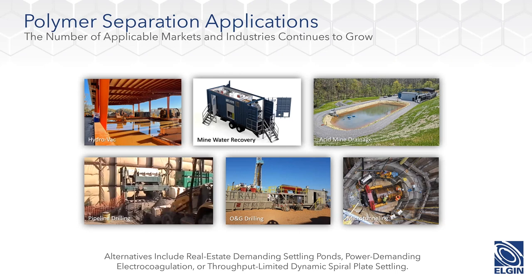There are a few alternatives to polymer chemistry — settling ponds, which take a lot of real estate and permitting; power-demanding electrocoagulation, which is effective but has significant power consumption; and throughput-limiting dynamic spiral plate settling. There's a company called Evodos that does a very good product targeting colloidal and near-colloidal solids, but it struggles with large-scale, high-volume throughput. That's why polymer chemistry still continues to hold such a position in the market.